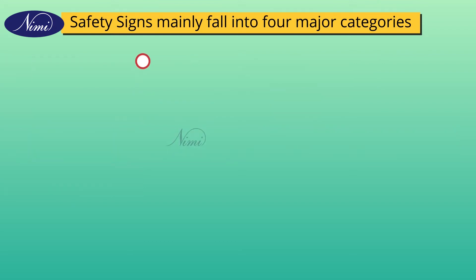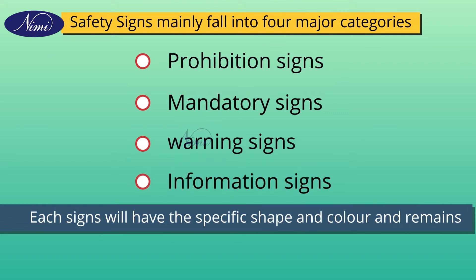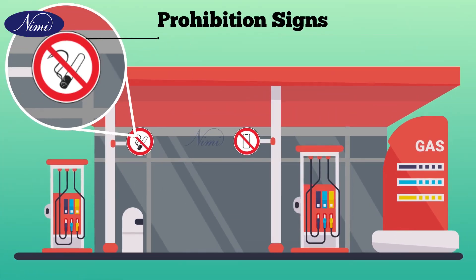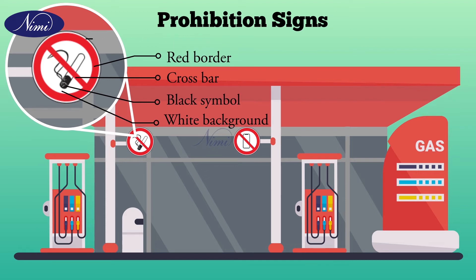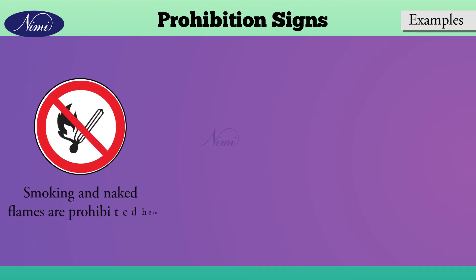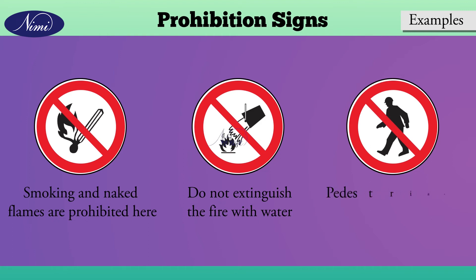Prohibitory signs have a circular shape with a red border and cross bar, with a black symbol on a white background. They show what must not be done. Some examples: this sign says that smoking and naked flames are prohibited here; this sign says do not extinguish the fire with water; and this sign says that this area is a pedestrian-prohibited area.